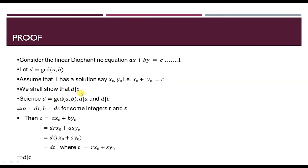Using the divisibility condition, d divides a means a equal to dr, and d divides b means b equal to ds, where r and s are integers. Since c equal to ax naught plus by naught, we substitute a equal to dr and b equal to ds to get dr·x naught plus ds·y naught, which equals d times (r·x naught plus s·y naught). Setting t equal to r·x naught plus s·y naught, we get d divides c. Thus we have proved that if d is the GCD of a and b and the equation has a solution, then d divides c.